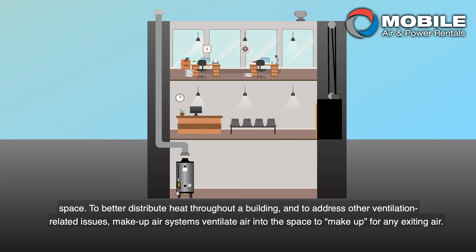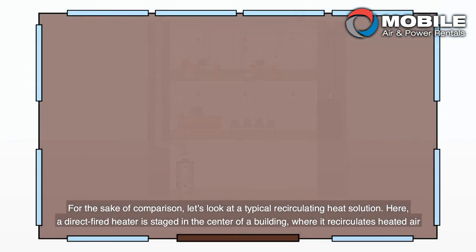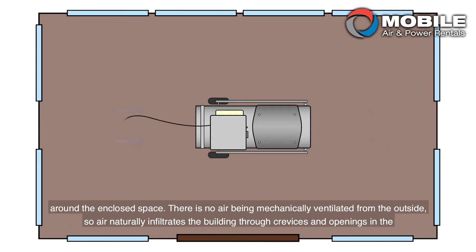To better distribute heat throughout a building and to address other ventilation-related issues, make-up air systems ventilate air into the space to make up for any exiting air. These systems come in many shapes and forms, but we'll focus on systems used in temporary heating solutions. For the sake of comparison, let's look at a typical recirculating heat solution.